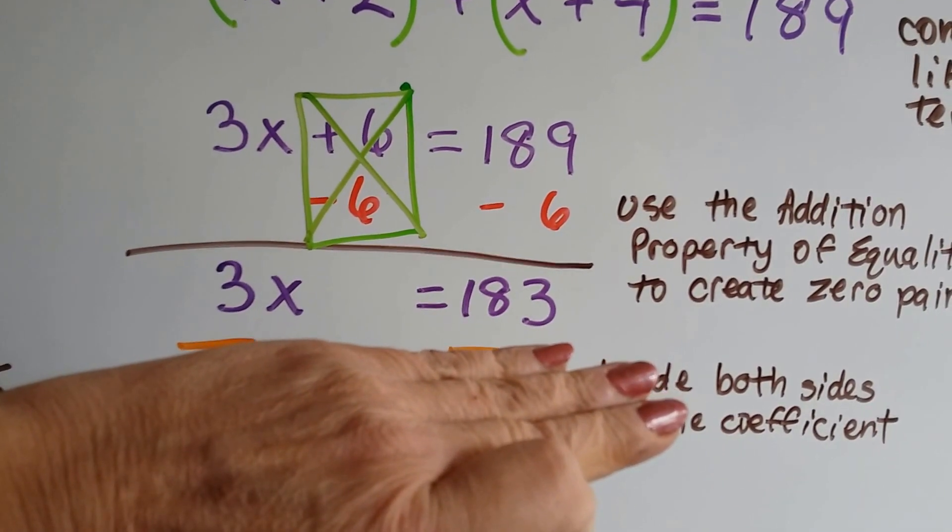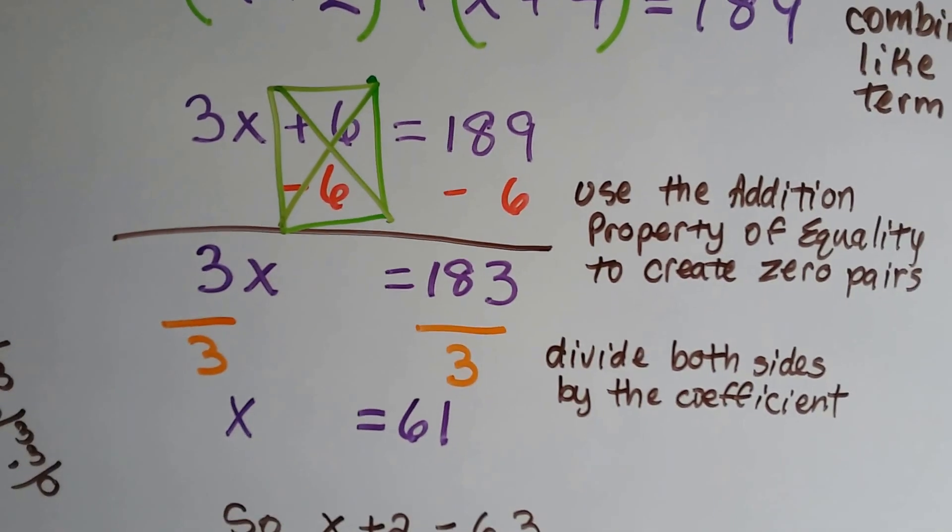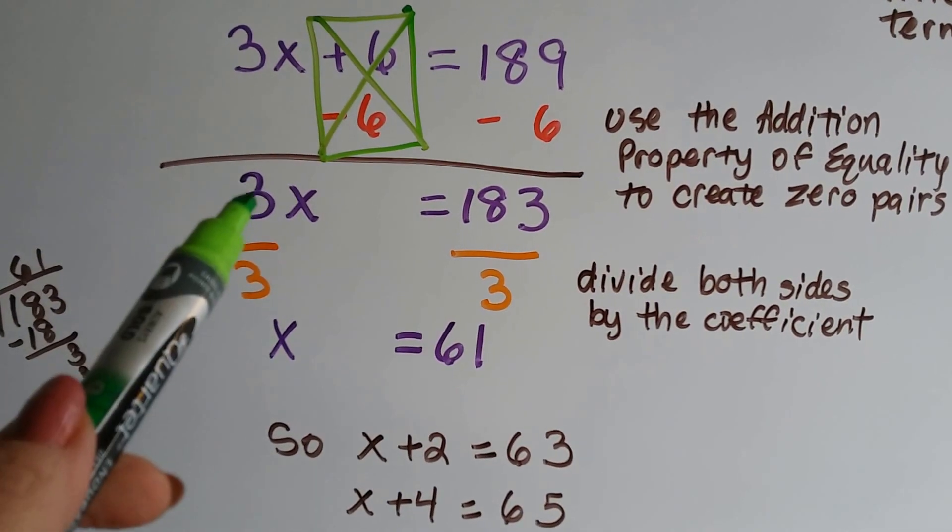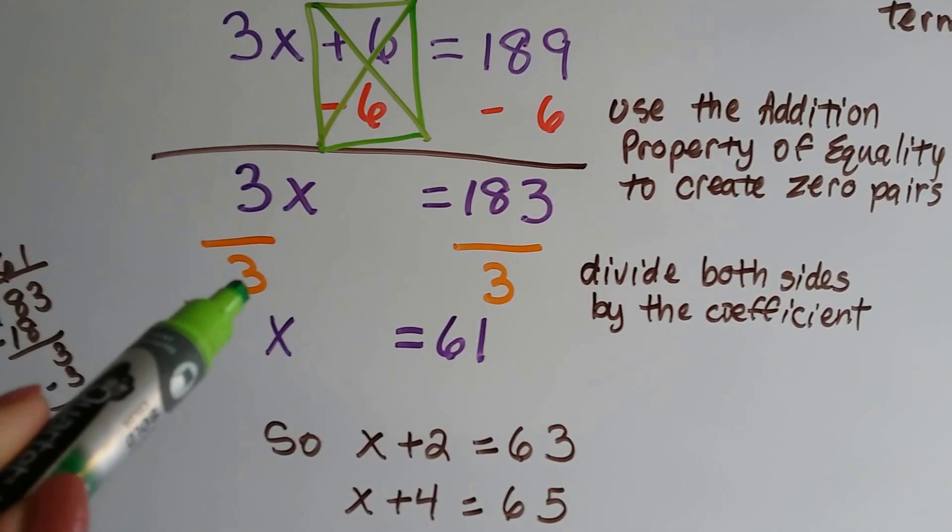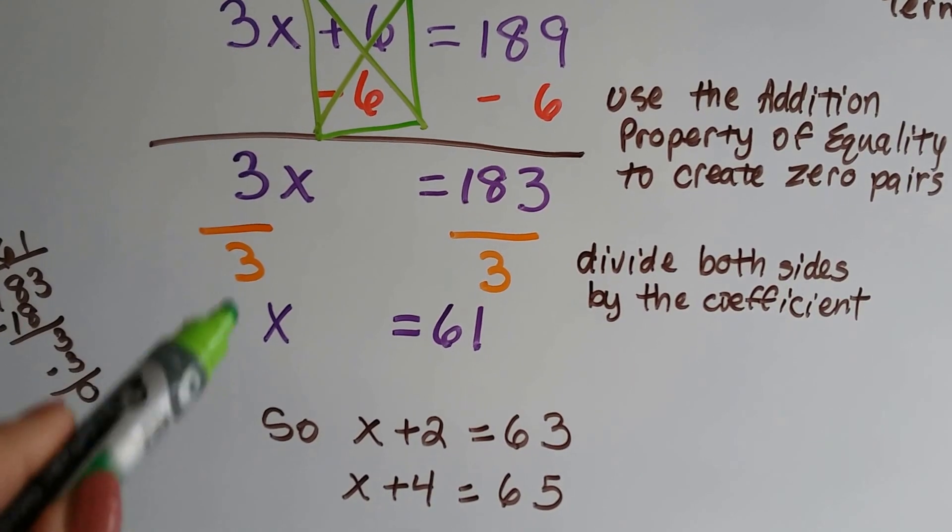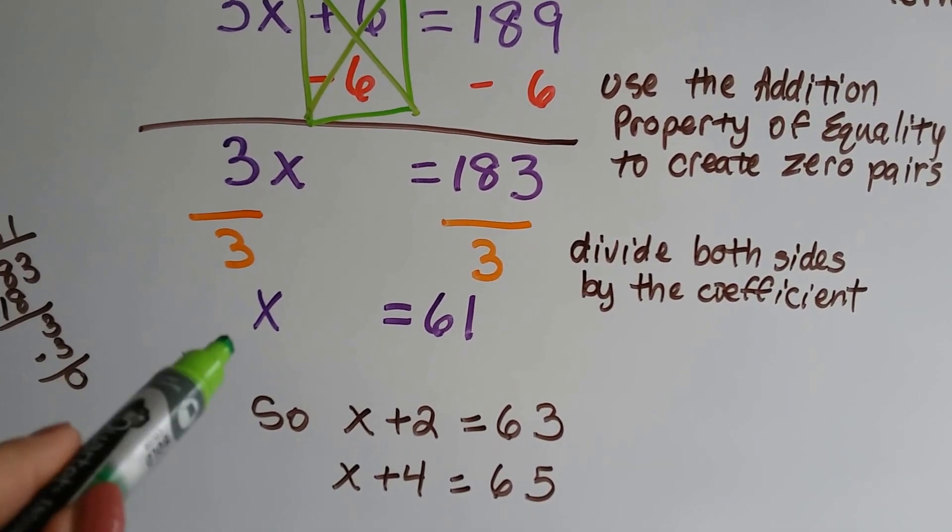Now our equation says 3x equals 183. Now we can just divide both sides by the coefficient 3. And 3 divided by 3 is a 1. So that's our buddy, the invisible 1, that identity property.